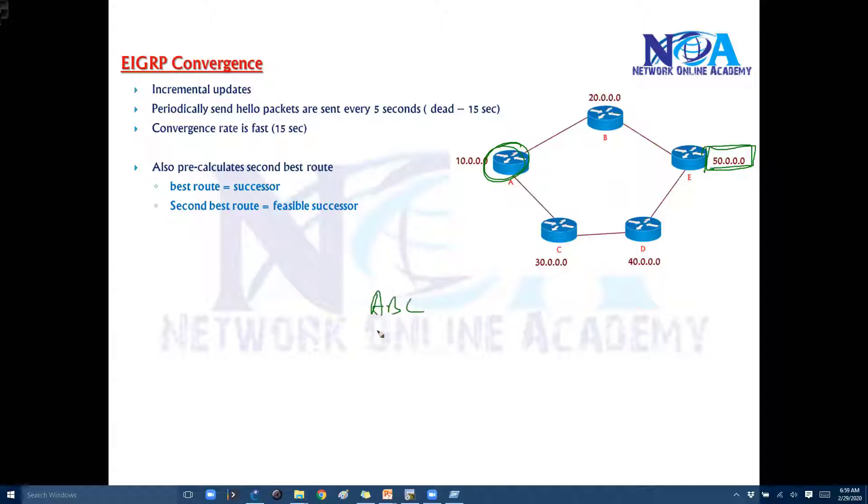C or we can go via A, C, D. So there are two possible routes. So it's going to decide any one of the best route. Let's say this is my best route which is being decided.